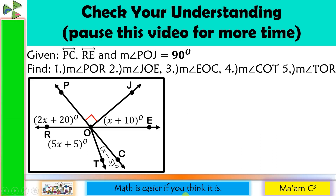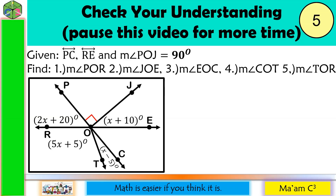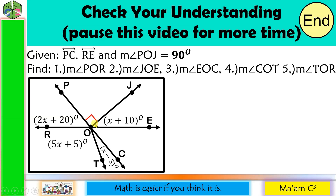Let us check your understanding — pause this video for more time. We are given line PC and line RE, and the measurement of angle POJ is 90 degrees, as indicated by the symbol. We are asked to solve for the measures of the following angles.